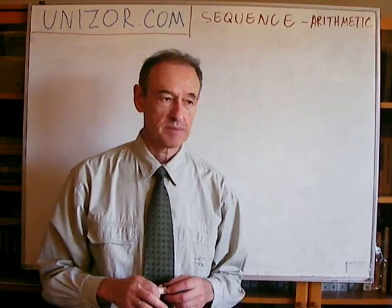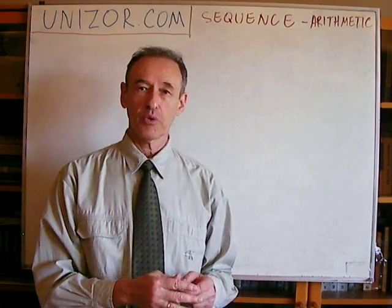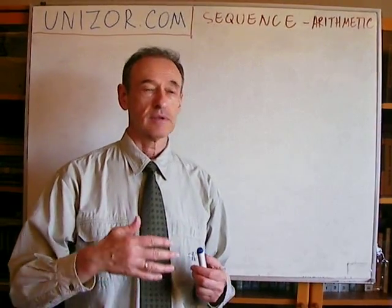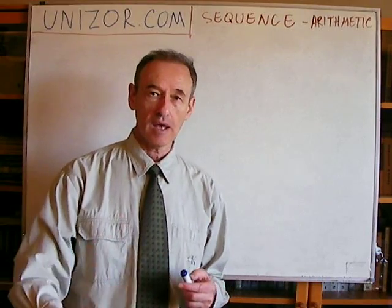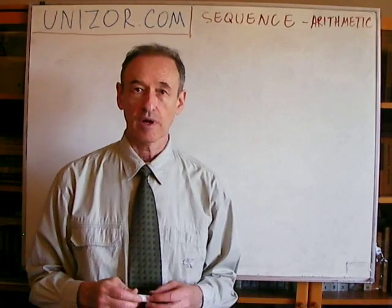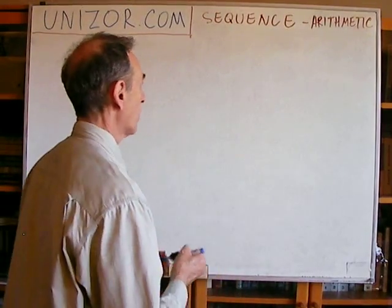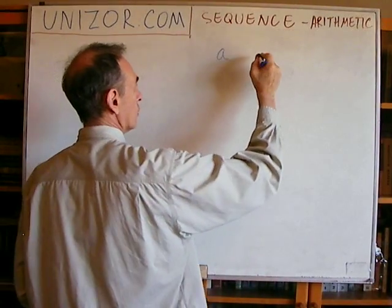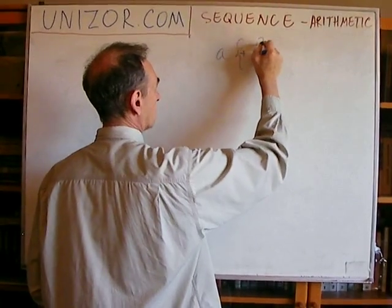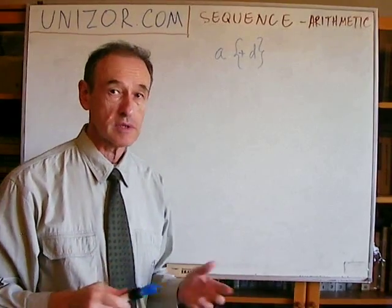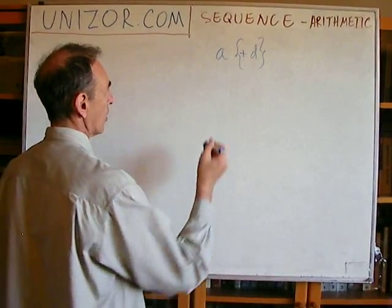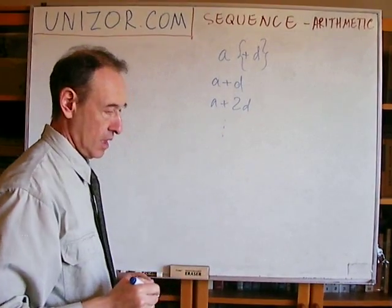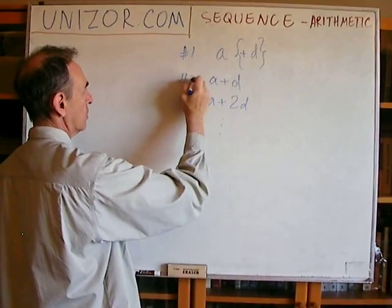So what is an arithmetic sequence? Very simple. You start at a certain point with a certain number as the first element of the sequence, and then you basically add the same number again and again and again to get to the second, third, fourth, etc., elements of this sequence. So element number one is some number A — usually a real number — and then you add some number D, which is called the difference of the arithmetic progression. So the next number would be A plus D, the next one A plus 2D, etc. This is element one, element two, element three.